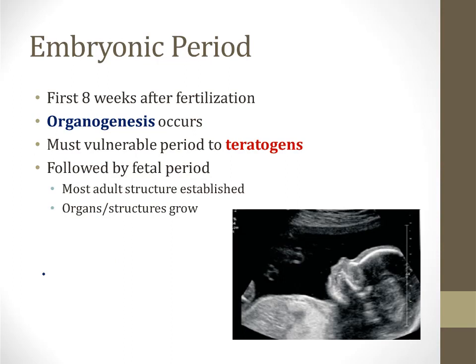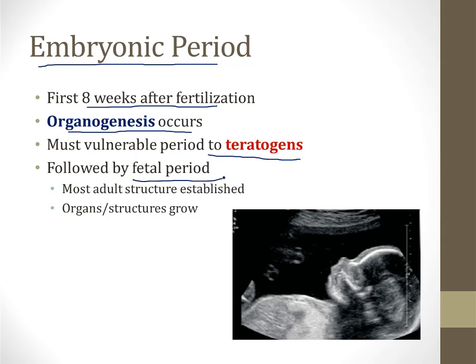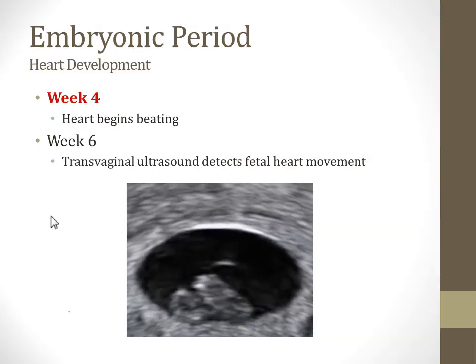For the rest of this video, I'll go through the development of some specific organs and structures. An important term is the embryonic period — the first eight weeks after fertilization, during which organogenesis occurs. This is when the heart, liver, lungs, and kidneys all form. During this period, the embryo is most vulnerable to teratogens because they can disrupt organ formation. The embryonic period is followed by the fetal period, in which most adult structures are established and organs are growing but already formed.